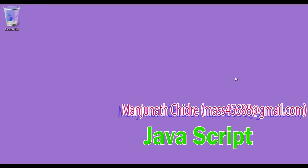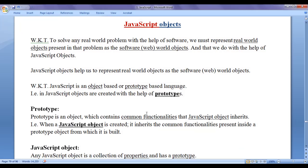Hello friends, welcome to the JavaScript video tutorial series. In the previous video tutorial, we understood what is an object in general. We understood that an object represents any real world entity — anything in this real world we can consider as an object, and every object is going to have attributes and behaviors. In this video tutorial, I would like to discuss JavaScript objects.